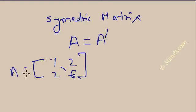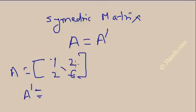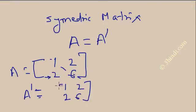To find the transpose A dash: remove the first row [1,2] and make it the first column, then take the second row [2,6] and make it the second column. What do you see? A dash is the same as A — [1,2; 2,6]. So A equals A dash for a symmetric matrix.